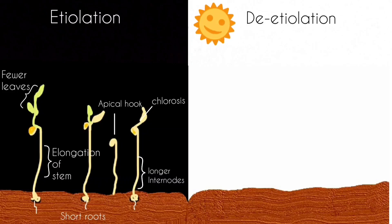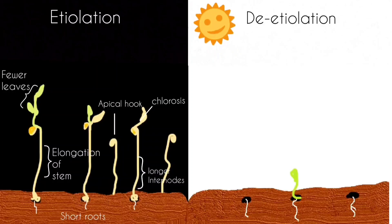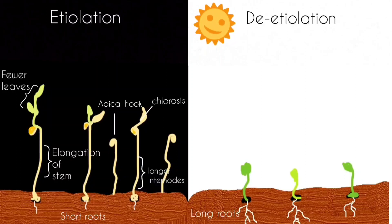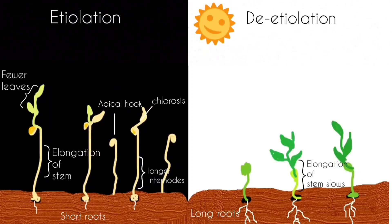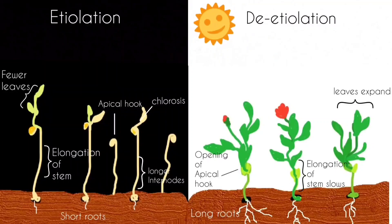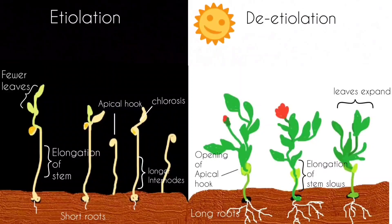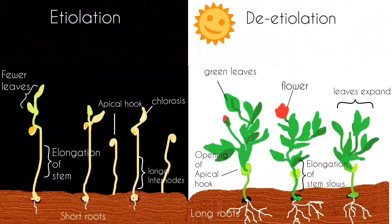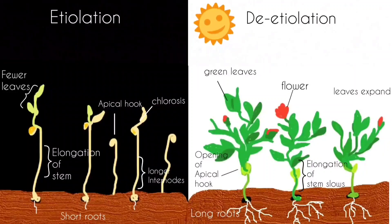Now let's understand some of the major changes that occur during deetiolation. Once we sow the seeds under light conditions, after a few days there will be development of long roots, the elongation rate of the stems slows, opening of the apical hook, leaves expand and there is stimulation of synthesis of anthocyanin, and the shoot produces chlorophyll. In short, it begins to resemble a typical plant.